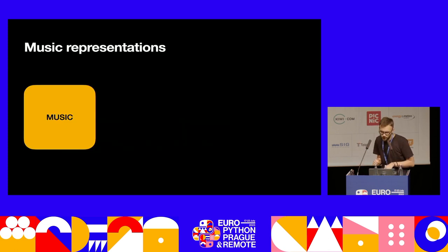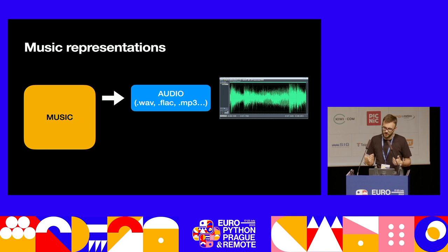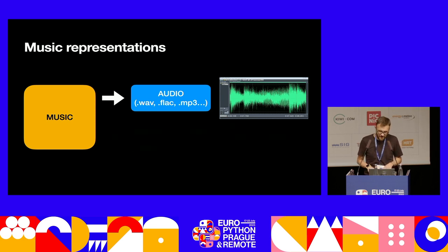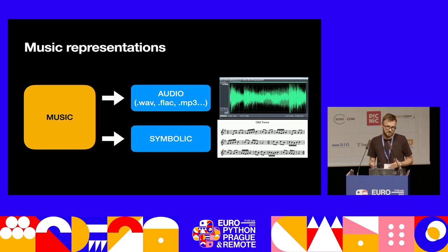So far, we've only been talking about one representation of music, which is audio — something that we can directly listen back to. So perhaps it's a WAV file or it's stored in an MP3 file. But this is not the only representation of music that's interesting for us. There's also what's called symbolic music. The original OG symbolic format is just sheet music — music that's written on a sheet of paper. You can't listen back to paper, but you can give it to a musician who can perform it for you.